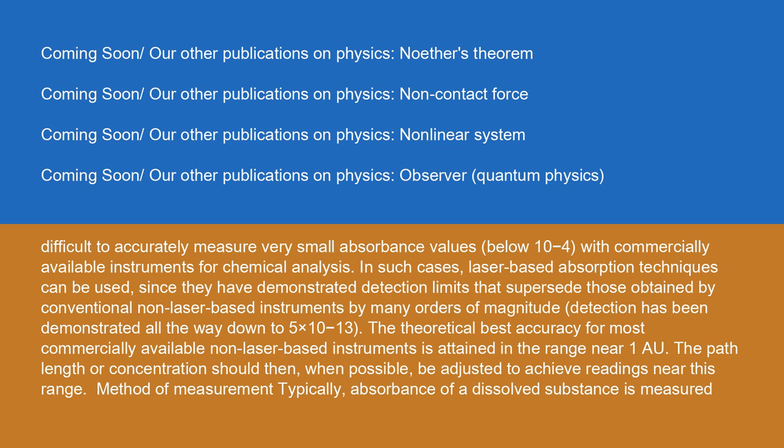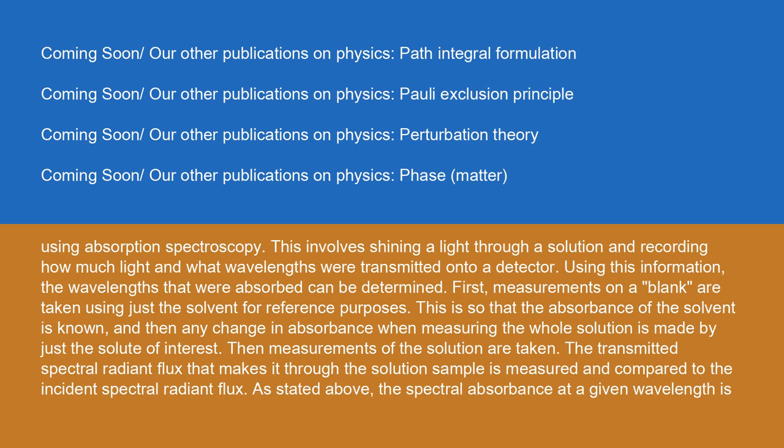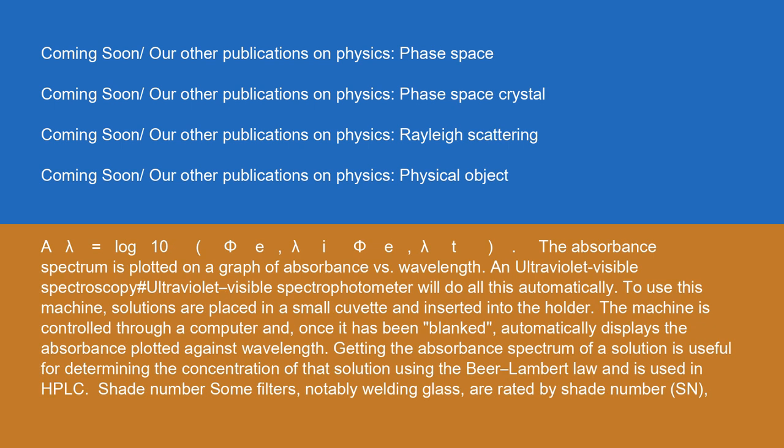Typically, absorbance of a dissolved substance is measured using absorption spectroscopy. This involves shining a light through a solution and recording how much light and at what wavelengths were transmitted onto a detector. Using this information, the wavelengths that were absorbed can be determined. First, measurements on a blank are taken using just the solvent for reference purposes, so that any change in absorbance when measuring the whole solution is attributable to just the solute of interest. Then measurements of the solution are taken. The transmitted spectral radiant flux through the solution sample is measured and compared to the incident spectral radiant flux. The spectral absorbance at a given wavelength is A_λ = log₁₀(Φ_Eλ,i / Φ_Eλ,t). The absorbance spectrum is plotted on a graph of absorbance versus wavelength.